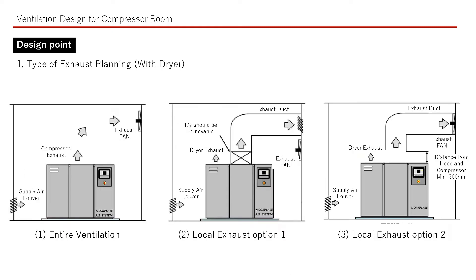These are the typical 3 types of exhaust planning for compressors: 1. Entire ventilation. 2. Local exhaust Option 1, using a fan for the room. 3. Local exhaust Option 2, using a fan for inside the duct. We will explain the design points and calculations for each method.